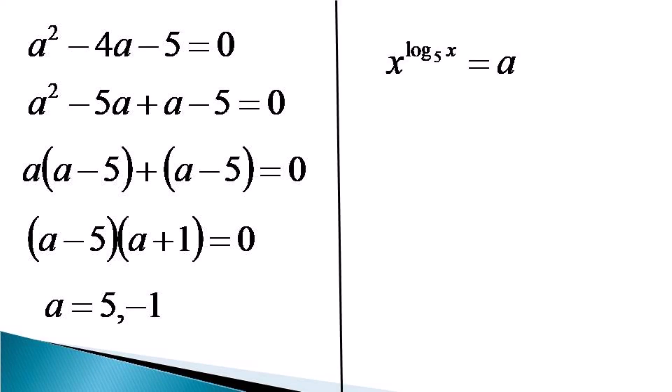Again, we back substitute in our original substitution that was x raise to the power log x to the base 5 is equal to a. So this becomes equal to 5 or minus 1. It cannot become minus 1. You can just find out why. So its value is equal to 5.